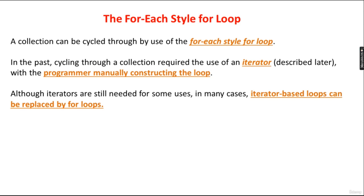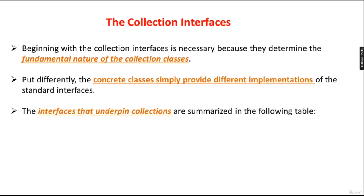The third reason for changes to the collection framework was the for-each style for loop. Collections can be cycled through using the for-each style for loop. In the past, cycling through a collection required the use of the Iterator interface, with the programmer manually constructing the loop. Although iterators are still needed in many cases, iterator loops can now be replaced by the for-each style for loop.